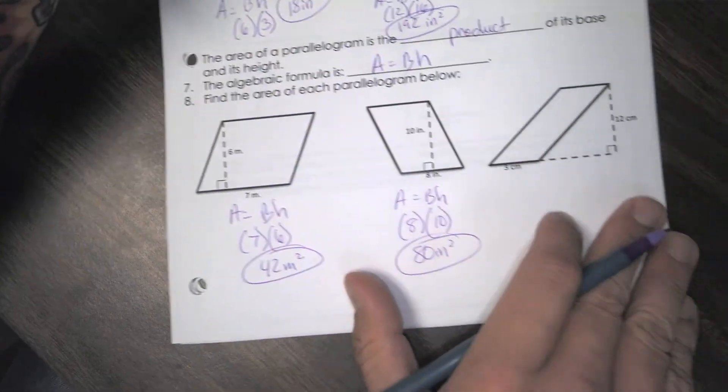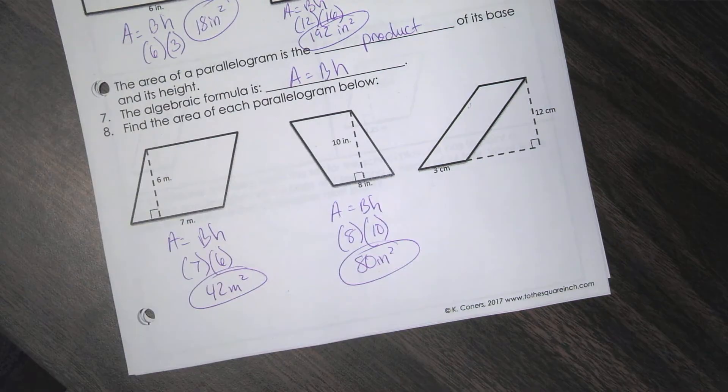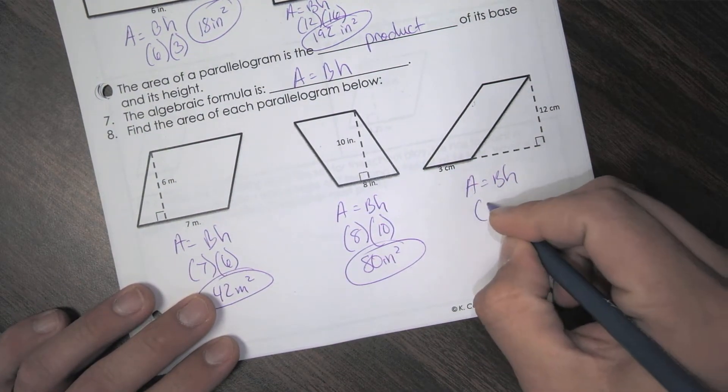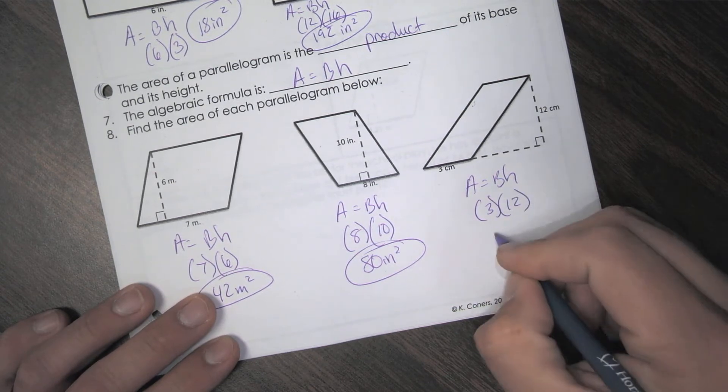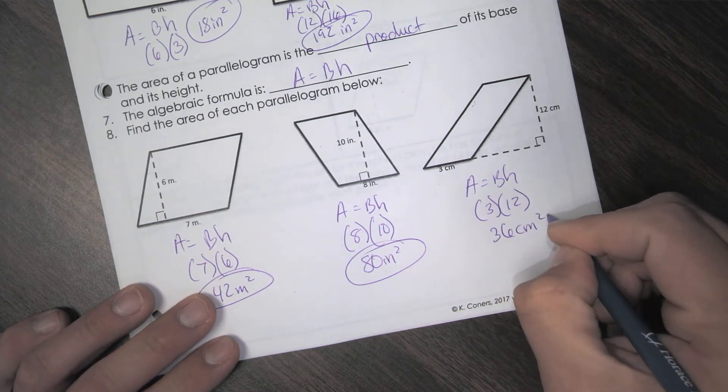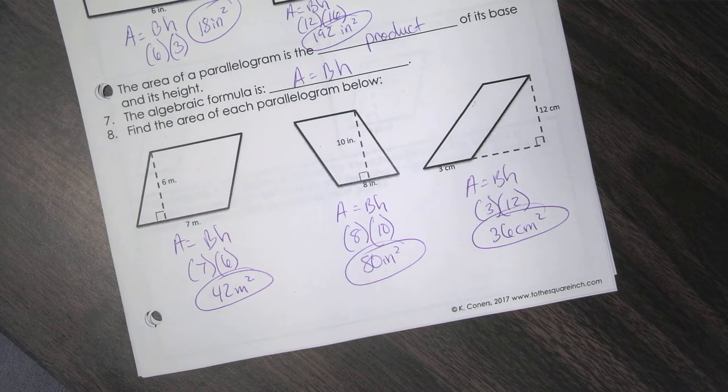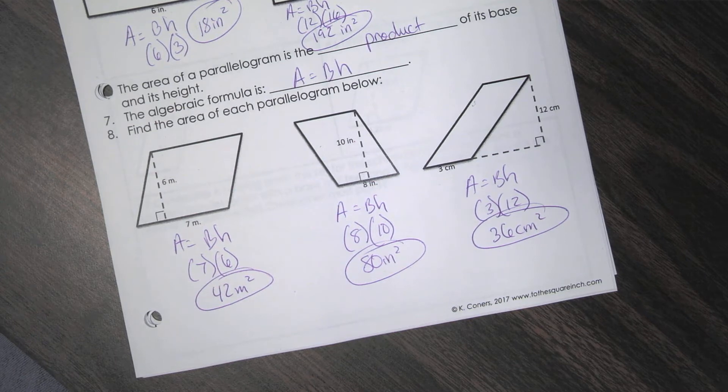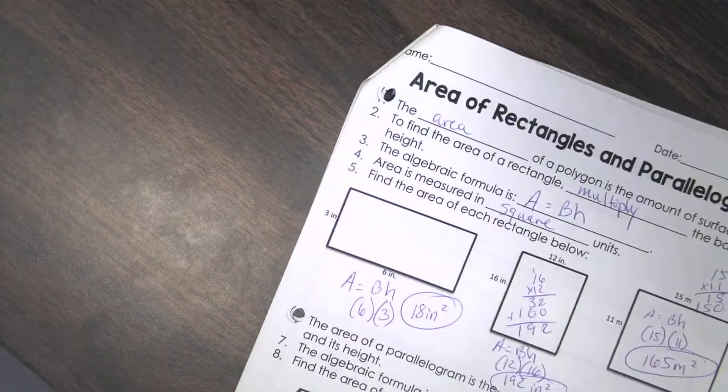And the last one here. Just because it looks a little weird doesn't mean that's still the base. That's still the height. So base is? And the height is? So 36 centimeters squared. That's it. I know parallelograms look a little weird. They're just basically sideways or they're leaning rectangles basically to one side or the other. That's a parallelogram. To find the area is just base times height.